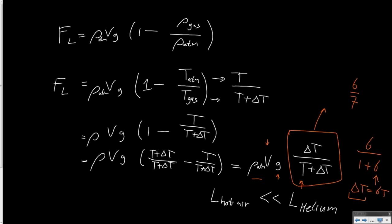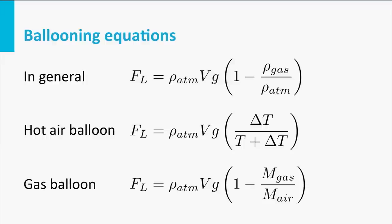This is one conclusion we can draw. With these two formulas you can now calculate the lift of any balloon, whether gas or hot air. This is the result of our derivation. We see the general lift formula for balloons in the first line, the hot air balloon lift formula, and the gas balloon lift formula. We also compared the two and saw that helium is much better at generating lift than hot air is.